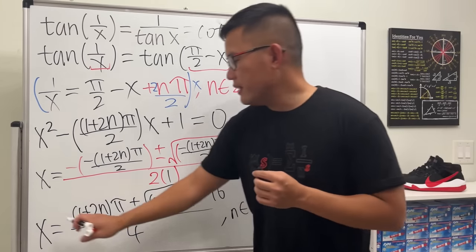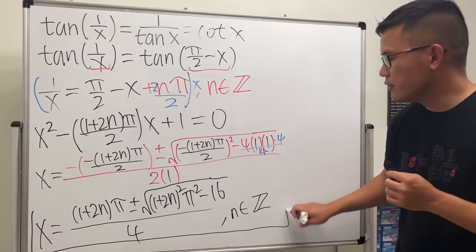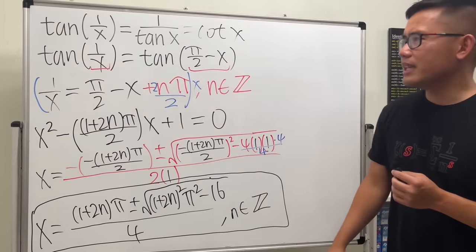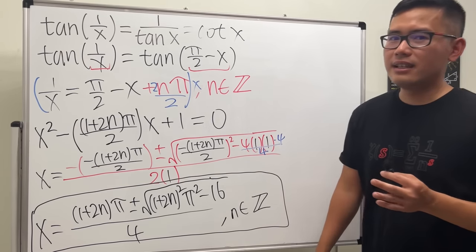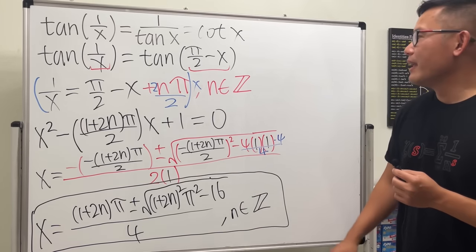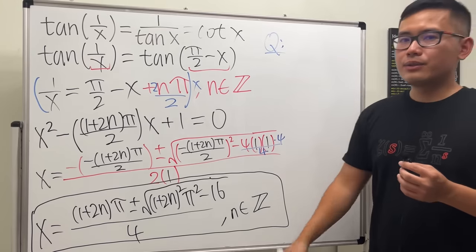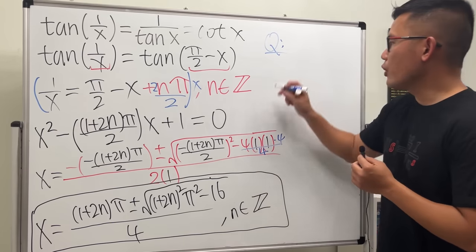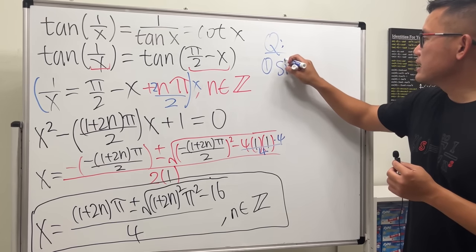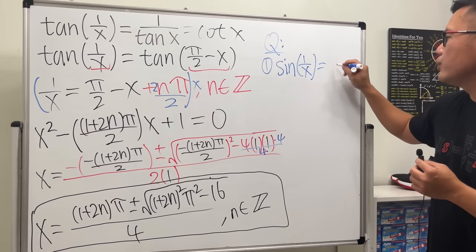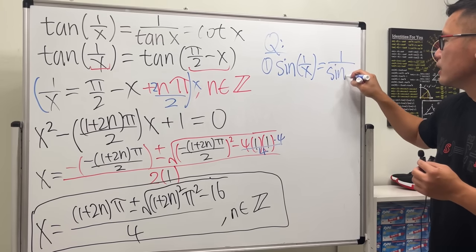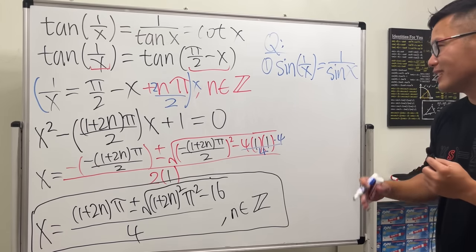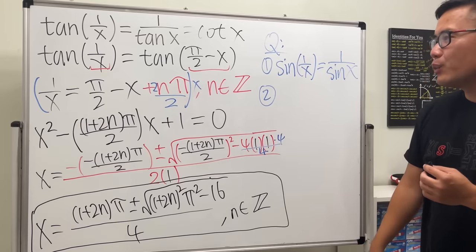Why is this so beautiful? Because it looks like a very nice identity, but it's wrong! If you'd like to try something, here's an interesting question: what if we change tangent to sine? Question number one: sin(1/x) = 1/sin(x). Go ahead and try to see if we can actually solve this.